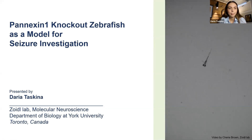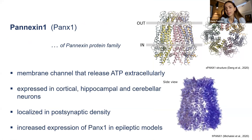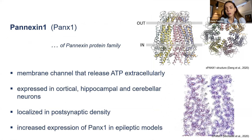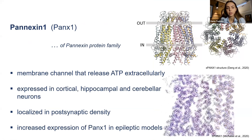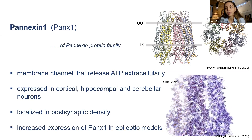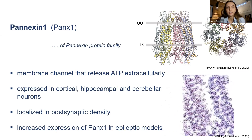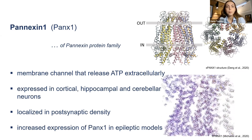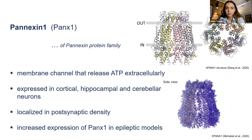Pannexin-1 is an integral membrane channel that is mostly known for releasing ATP into the extracellular space. They're located on astroglia and neurons, highly expressed in cortical and hippocampal neurons, and are localized in the lateral post-synaptic density. Pannexin-1 has been a research interest in epilepsy due to the fact that it has been shown to be highly expressed at the mRNA and protein level in patients with temporal lobe epilepsy, and it's been correlated to recurrent seizures. Along with the fact that it releases ATP, there's a hypothesis that Pannexin-1 contributes to seizure propagation.